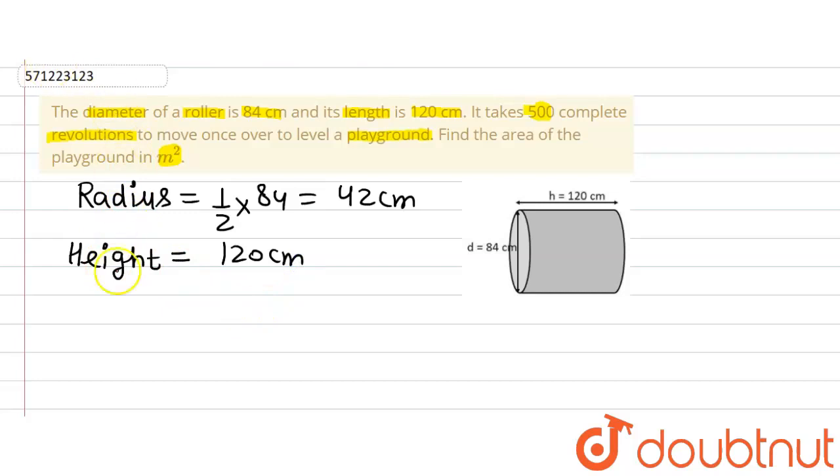Now we are supposed to find out the curved surface area of the roller. The formula for curved surface area of a cylinder is 2πrh, where r is the radius of the cylinder and h is the height of the cylinder.